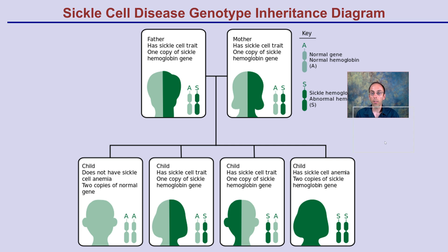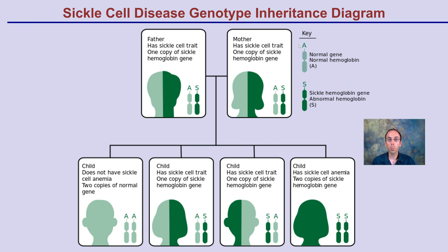Looking at the sickle cell example: when two carriers cross, one offspring may have two normal copies and not have sickle cell anemia, two offspring may be carriers for sickle cell and carry the gene, and sadly one offspring may have both copies of the sickle cell gene and will likely not survive to reproductive age without intervention. This is an example of following a genotype through inheritance.